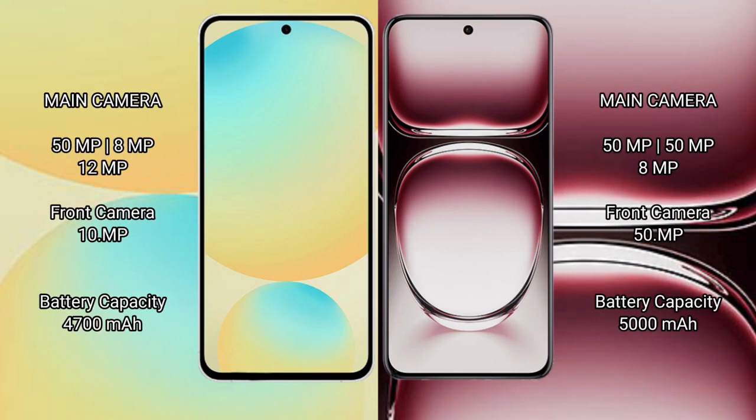Samsung Galaxy S24 FE features a triple camera setup with 50MP plus 8MP plus 12MP, and a 10MP front camera. Oppo Reno 12 Pro features a triple camera setup with 50MP plus 8MP, and a 50MP front camera.